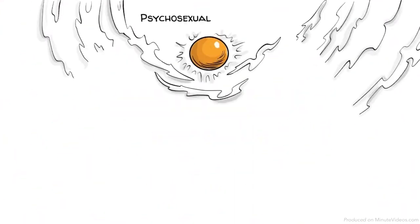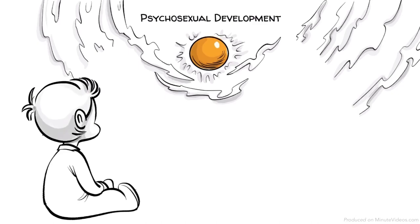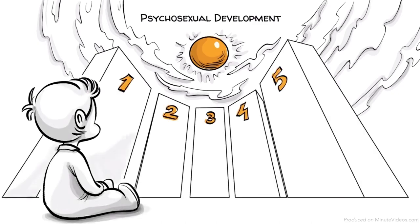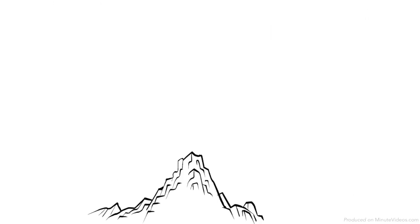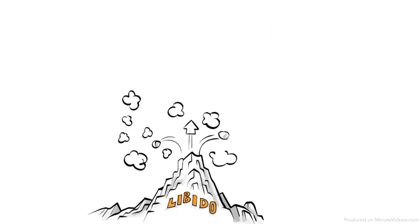Freud's theory of psychosexual development claims that as we grow up we pass through five critical phases. Our sex drive, which Freud called the libido, focuses in a different erogenous zone at each phase.